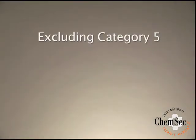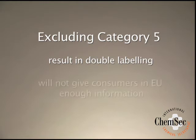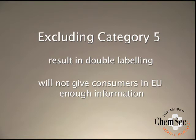Many countries, such as the United States and South Africa, are expected to introduce GHS including category 5. Excluding category 5 would still mean that European companies trading internationally would nonetheless have to label their category 5 products. EU consumers would receive less information than consumers in other countries where the UN GHS is to be fully adopted.